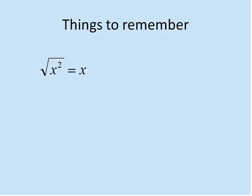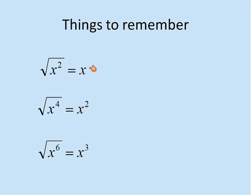Things to remember when we start looking at square roots with variables: the square root of x squared is equal to x, since x times x is x squared. The square root of x to the power of 4 would be x squared, and the square root of x to the power of 6 would be x cubed. Basically, if you take the square root of any variable, you just divide the exponent in half: 2 divided by 2 is 1, 4 divided by 2 is 2, 6 divided by 2 is 3.